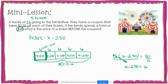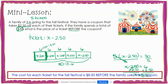I can show this on my equation by adding $2.50 to both sides. Negative $2.50 and positive $2.50 are additive inverses, so they combine to make zero, leaving x equals. On the right side, 6 plus $2.50 gives a total of $8.50. The question asked what was the price of the ticket before the coupon. Since x equals $8.50, the cost for each ticket to the fall festival is $8.50 before the family uses their coupon.